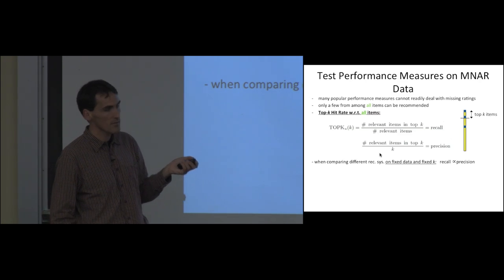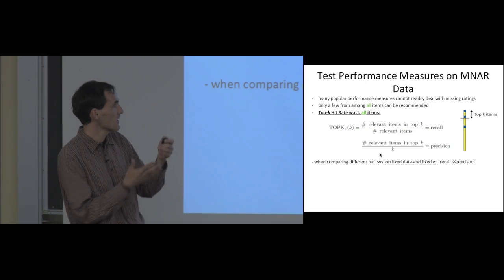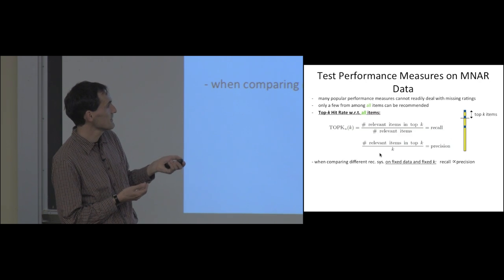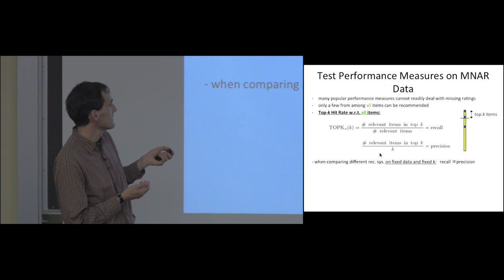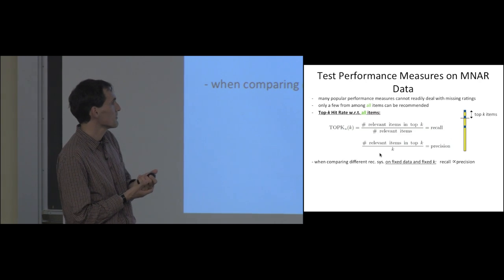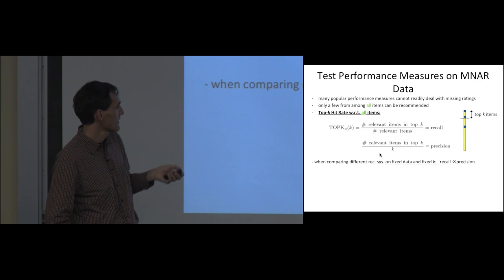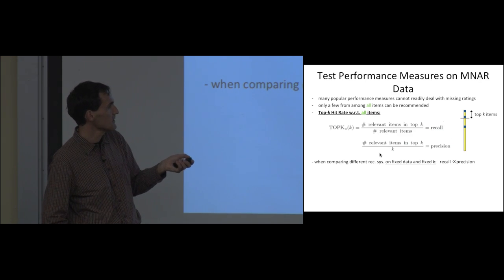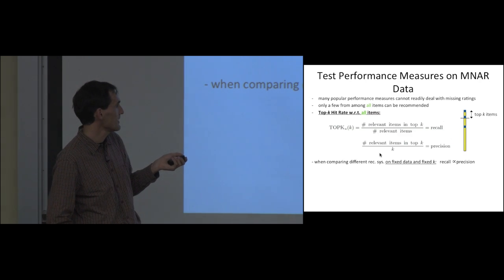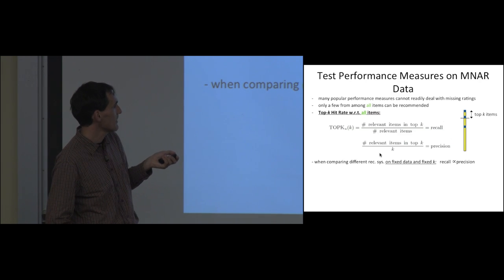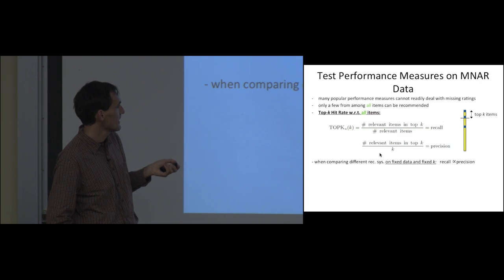We can take the top-K items — say top 10 or top 3, depending on the application — and count how many relevant items appear. Taking that ratio gives the so-called recall. Another metric is precision, where the denominator is K rather than the total number of relevant items. For a fixed dataset and fixed K, recall and precision are proportional to each other.